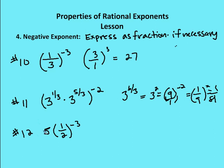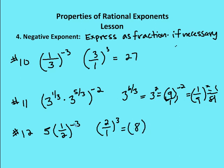Problem 12 requires applying order of operations: parentheses, exponents, multiplication, division, addition, subtraction. I need to take care of the first operation, which is taking 1 half to the negative third — not multiplying 5 times 1 half first. So 1 half to the negative third gives me 2 over 1 to the third, which equals 8. Then I multiply that value by 5 and get 40.